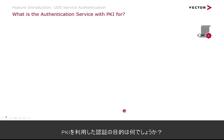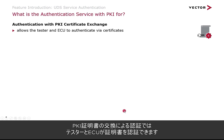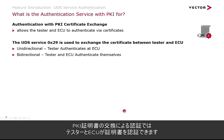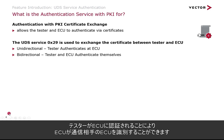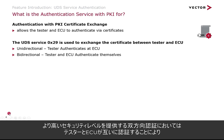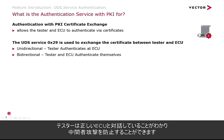So what is authentication with PKI for? The authentication with PKI Certificate Exchange allows the tester and ECU to authenticate via certificates. The UDS service 29 is used to exchange the certificate between tester and ECU — in a unidirectional way where the tester authenticates at the ECU, so the ECU knows who it's talking with — or even at a higher security level, bi-directionally, where tester and ECU authenticate each other, so the tester also knows it's talking to the correct ECU and nobody can inject data in the middle.